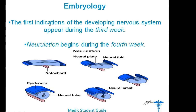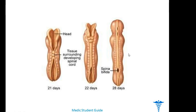Neurulation is the formation of the neural plate and neural tube that begins during the fourth week, in which a flat sheet of ectodermal cells — the neural plate — is converted into a tube. The fusion of the neural tube occurs in early pregnancy from 21 to 28 days after conception. Abnormal closure of the neural plate results in neural tube defects like spina bifida.